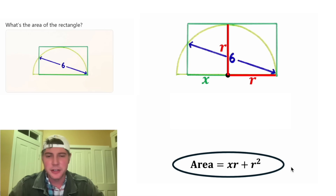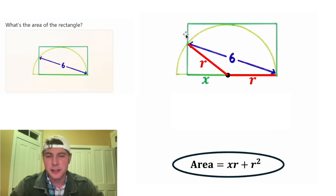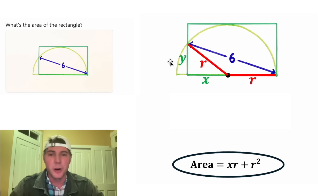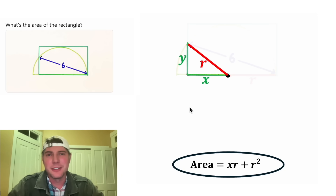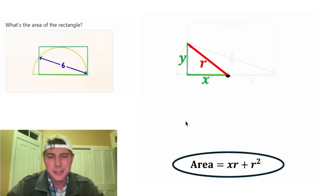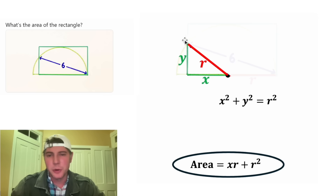Next, let's swing this radius down here and label this other unknown distance as Y. This Y, X, and R make a nice-looking right triangle. Let's do the Pythagorean Theorem: X squared plus Y squared is equal to R squared.